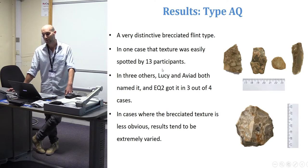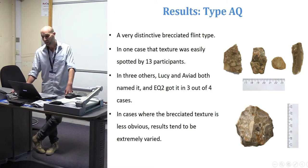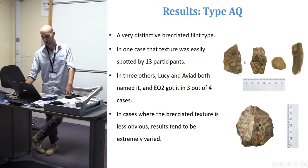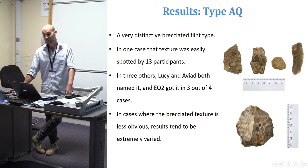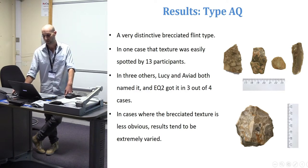Type AQ is a very distinctive black-shaded flint type. In one case, its texture was easily spotted by 13 participants. In three other cases, Lucy and I both named it, and EQ2 got it in three out of four cases. However, in cases where the black-shaded texture was less obvious, results tended to be more varied — or extremely varied.